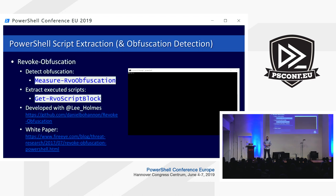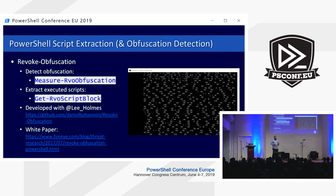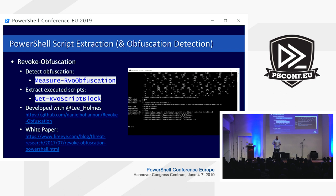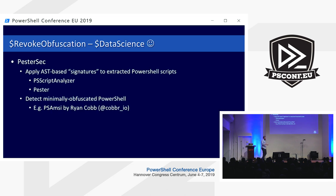Novel detection approaches. Last year I gave a talk here at PSConf about research that Lee and I did in 2017, using data science techniques and the power of the abstract syntax tree to detect obfuscated PowerShell code without any signatures — a huge learning experience. Another approach is a talk I'll be giving on Thursday called PesterSec — a hybrid using the power of the AST but writing signatures based not on strings or patterns but on numbers that don't make sense, to detect minimal obfuscation that came about after our Revoke-Obfuscation research.